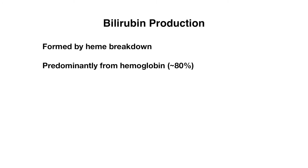Let's start with bilirubin production, which is our first step. Bilirubin is actually formed by heme breakdown. Most of our heme is actually found in hemoglobin, which is where about 80% of daily bilirubin production is derived from. Hemoglobin breaks down to heme and globin, and hemoglobin is found in red blood cells, where it helps with oxygen delivery to tissues. About every 120 days or so, red blood cells that are old get broken down and recycled. This is done mainly by phagocytes known as macrophages that are found in the spleen, as well as the bone marrow. This group of macrophages responsible for the breakdown of red blood cells are referred to as the reticuloendothelial system — keep this in mind because I will mention this in the next few slides.